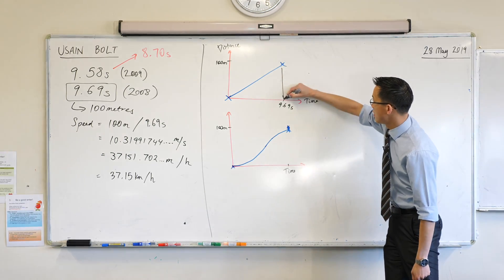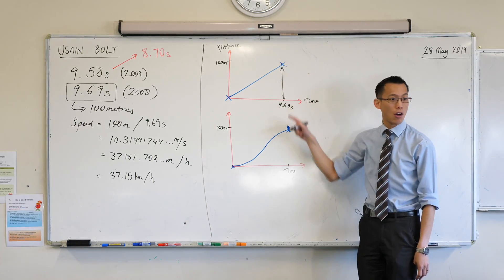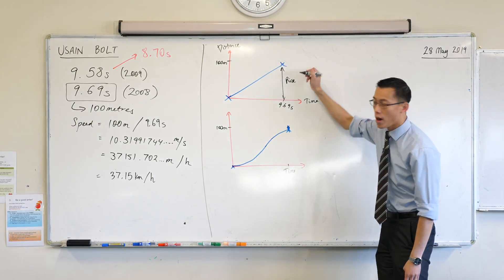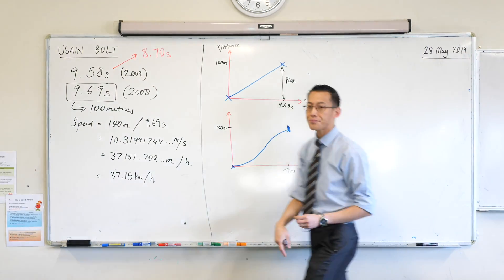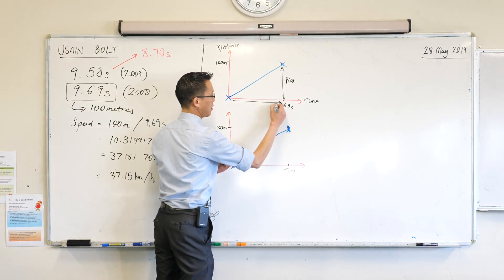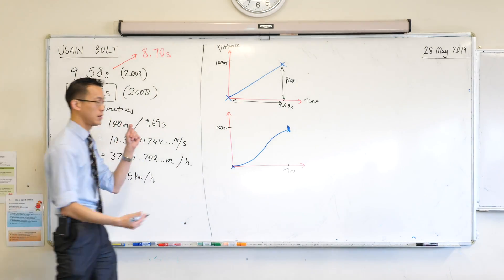Now, this distance here on our graph is vertical. So you could call this the rise, yeah? That's how far he's gone vertically on the graph. And then we divide it by time, which is over here on the horizontal axis. So we wouldn't call this rise, we would call it run.